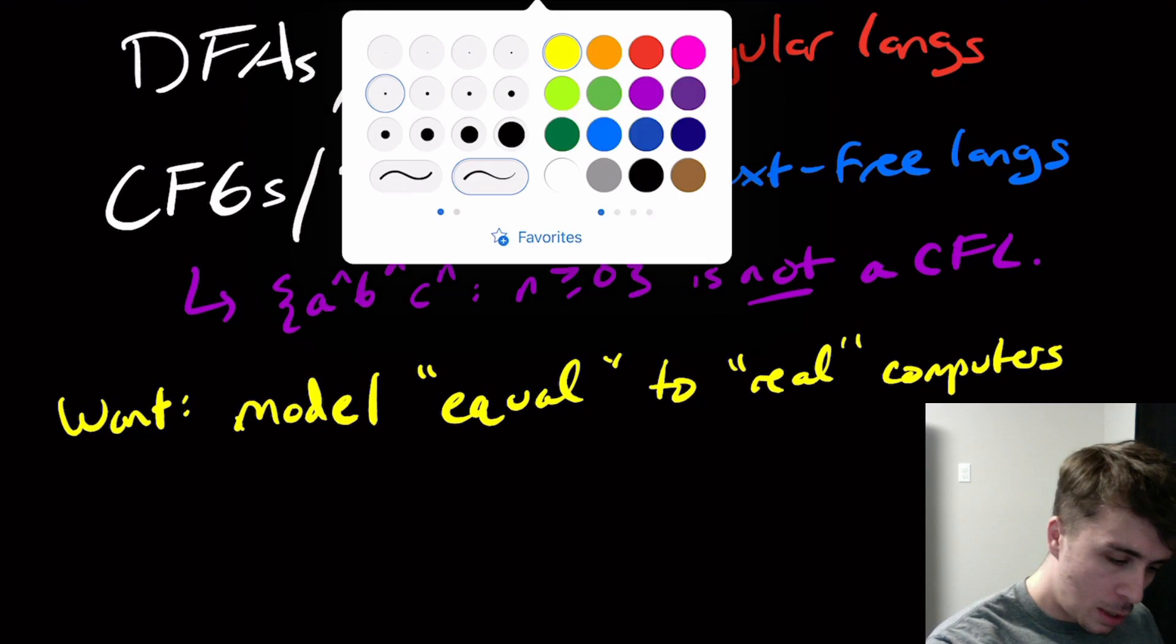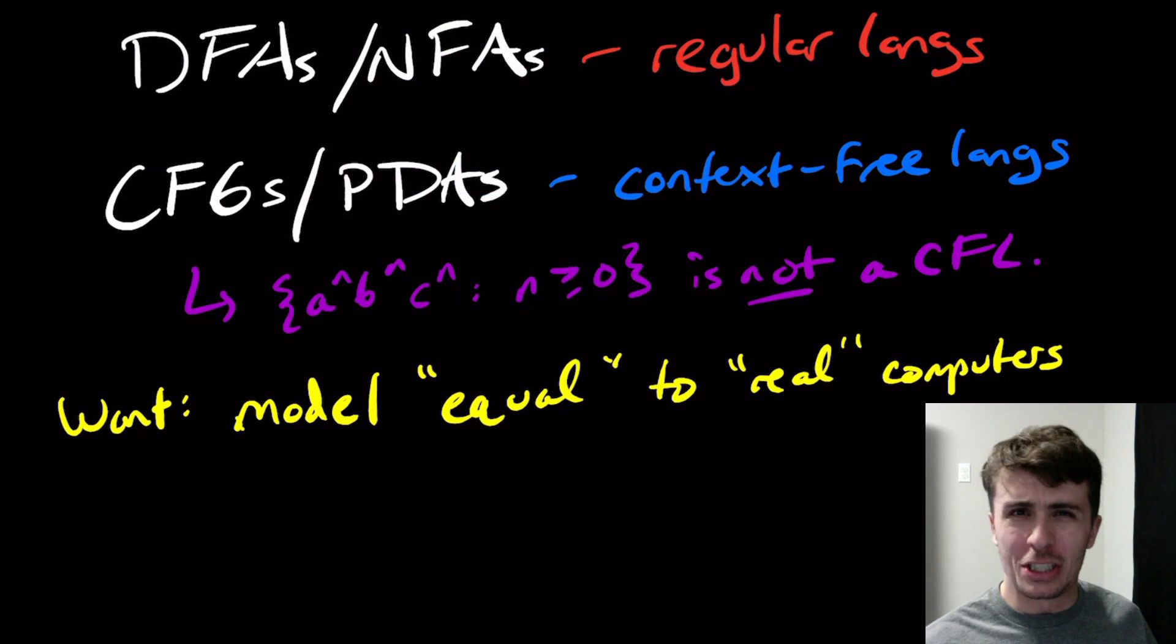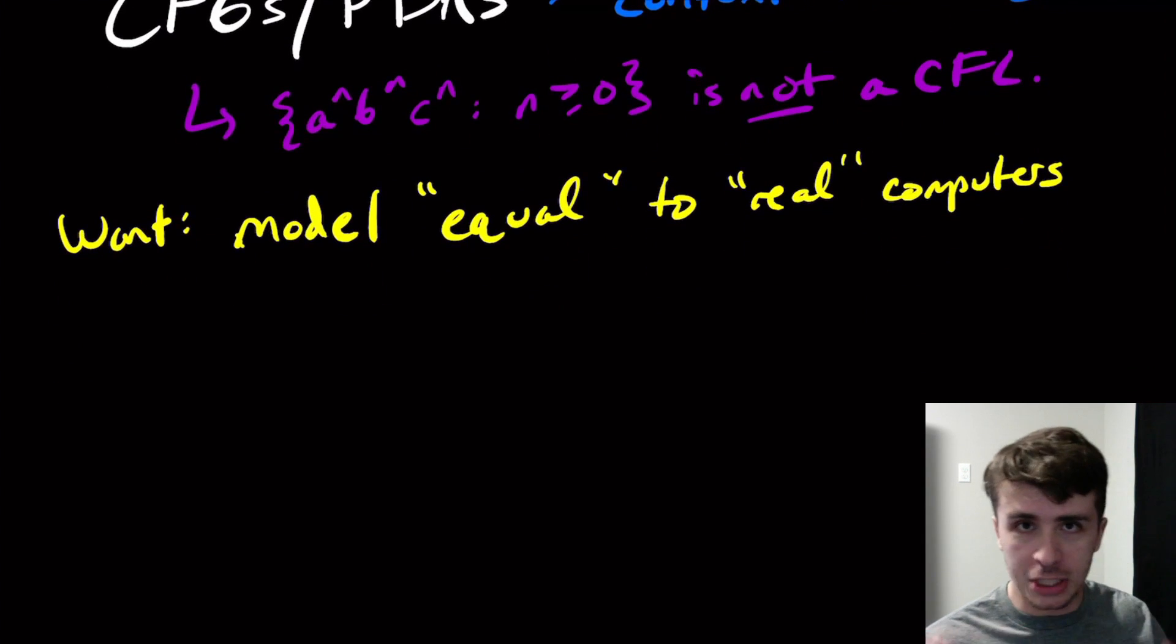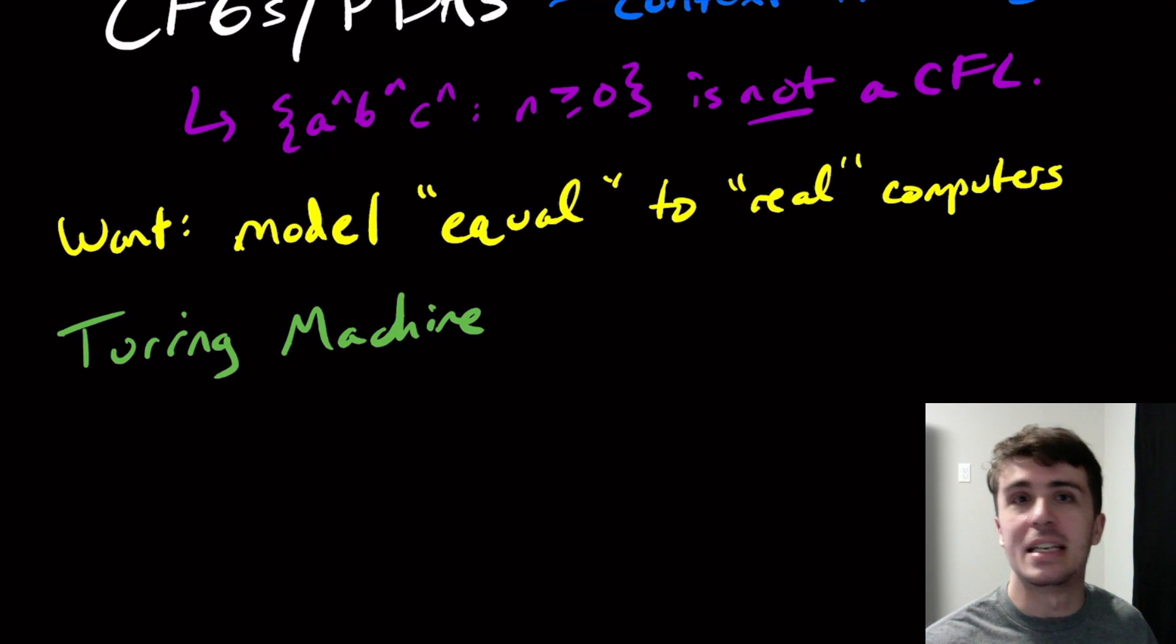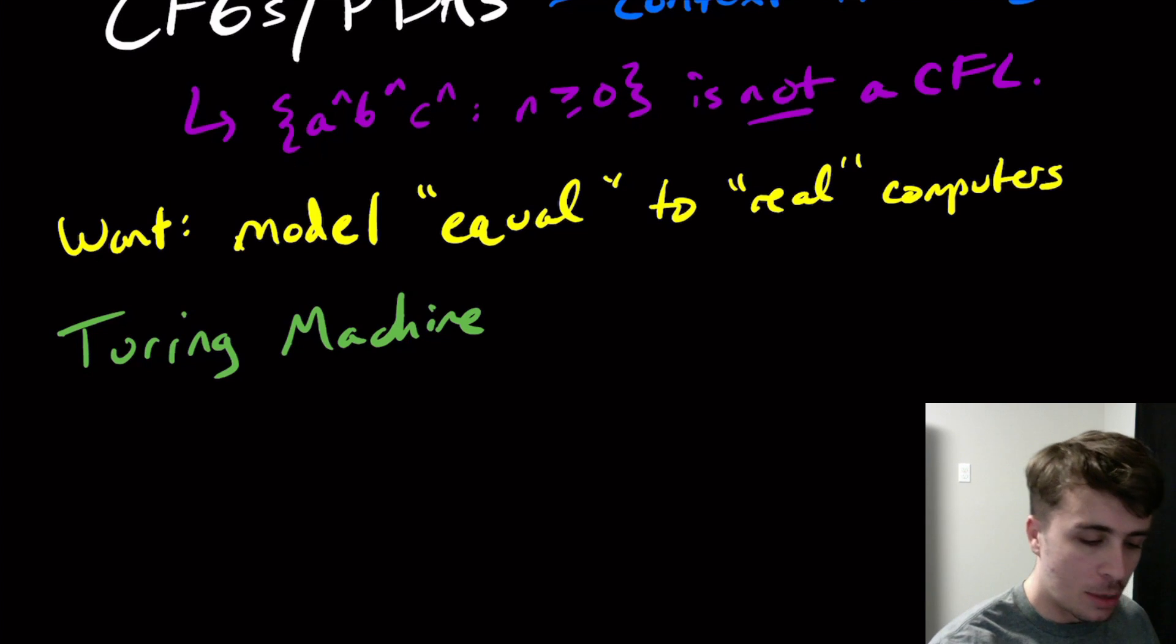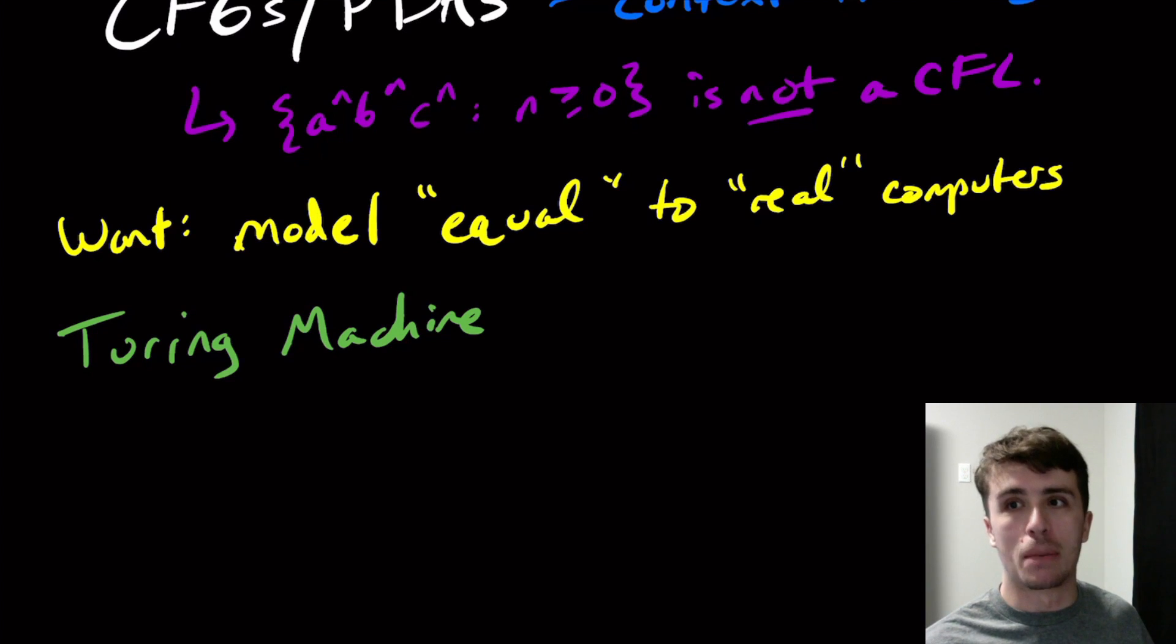Normally when I teach this in my classes, I would go into the motivation in terms of how this came about and the history of it, but I'm going to skip right to the punchline, and we're going to talk about something called a Turing machine. Named after Alan Turing, and no, he did not name it himself.